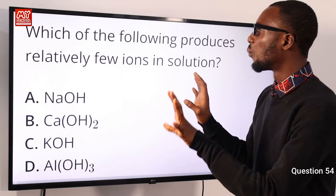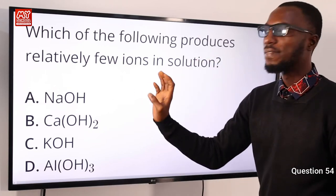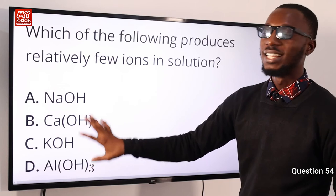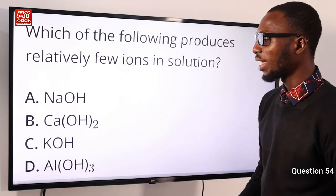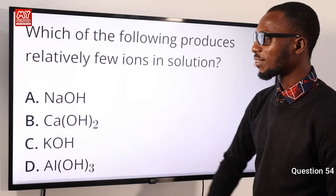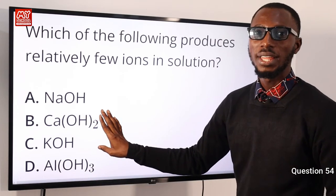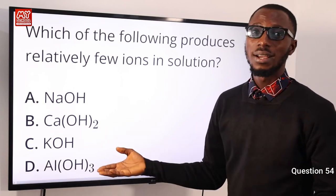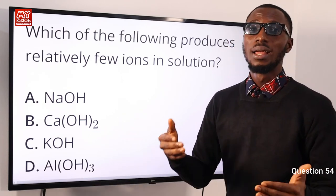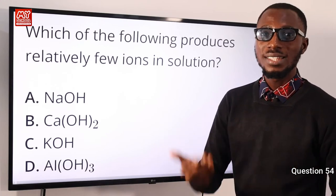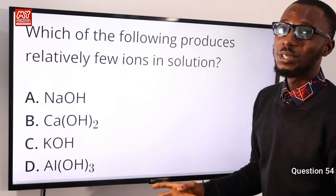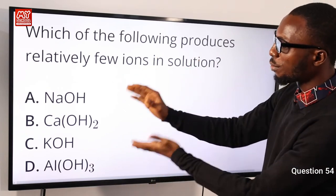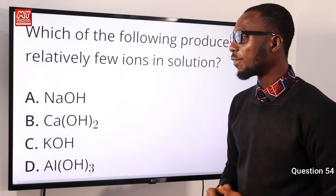Question 54: Which of the following produces relatively few ions in solution? Sodium hydroxide and potassium hydroxide are very soluble in water. Aluminum hydroxide is insoluble. Calcium hydroxide is only slightly soluble in water, and its solubility decreases as temperature increases, giving lime water. Therefore, calcium hydroxide produces relatively few ions — option B is correct.